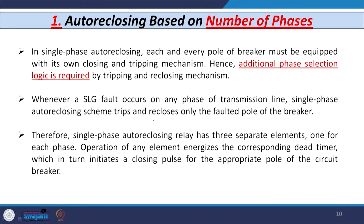For single phase auto reclosing, each pole of the breaker must be equipped with its own closing and tripping mechanism. Additional phase selection logic is required for tripping and closing in case of circuit breakers. Whenever a single line-to-ground fault occurs on any phase of the transmission line, the single phase auto reclosing system trips and restores only the faulted phase of the breaker.